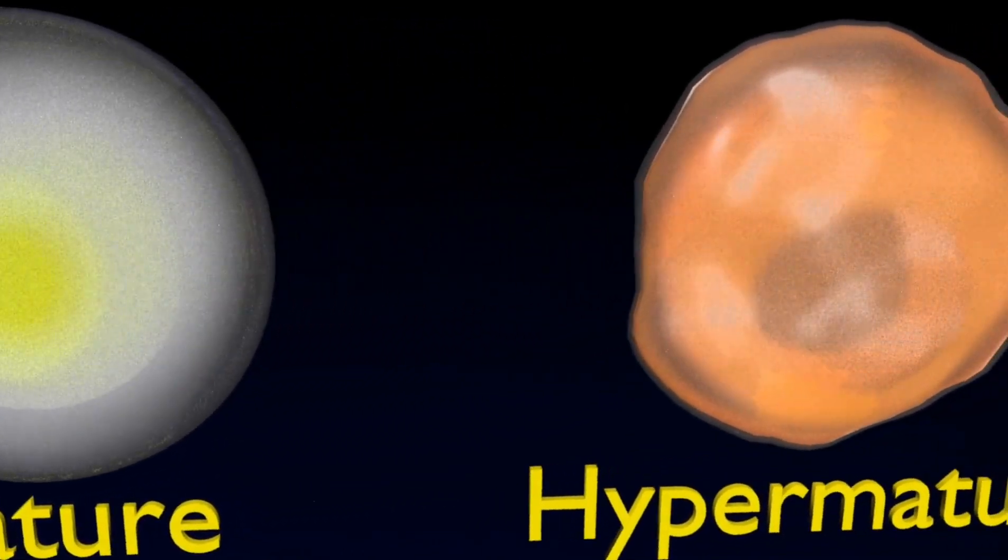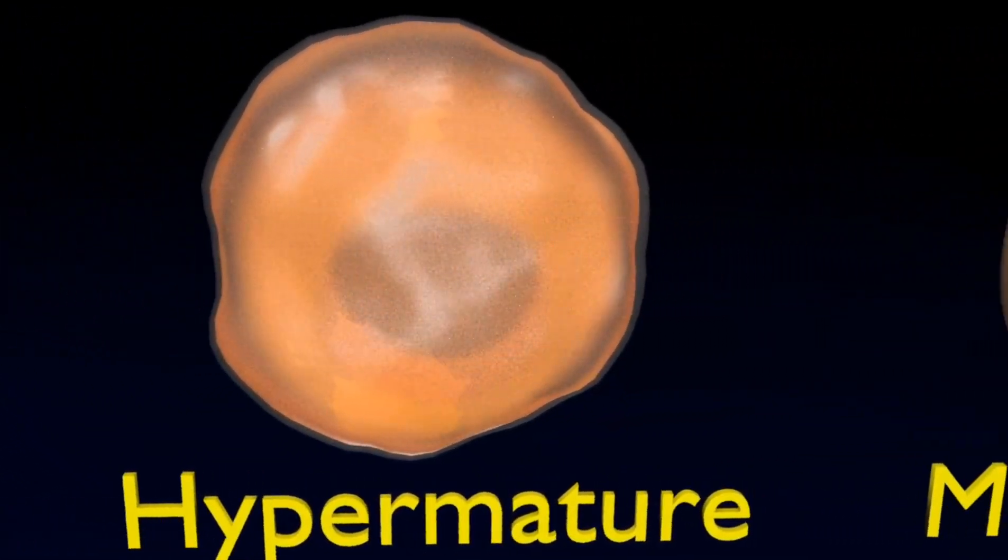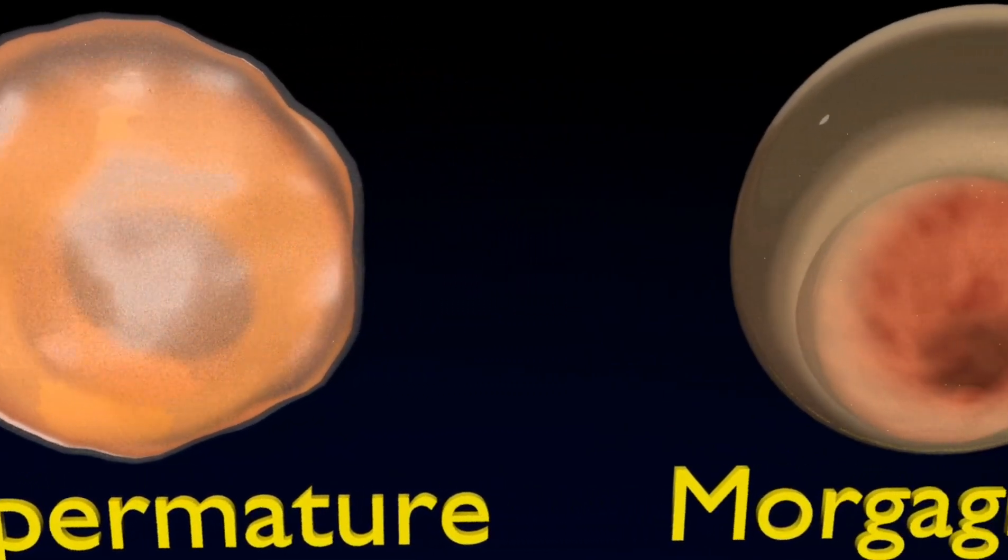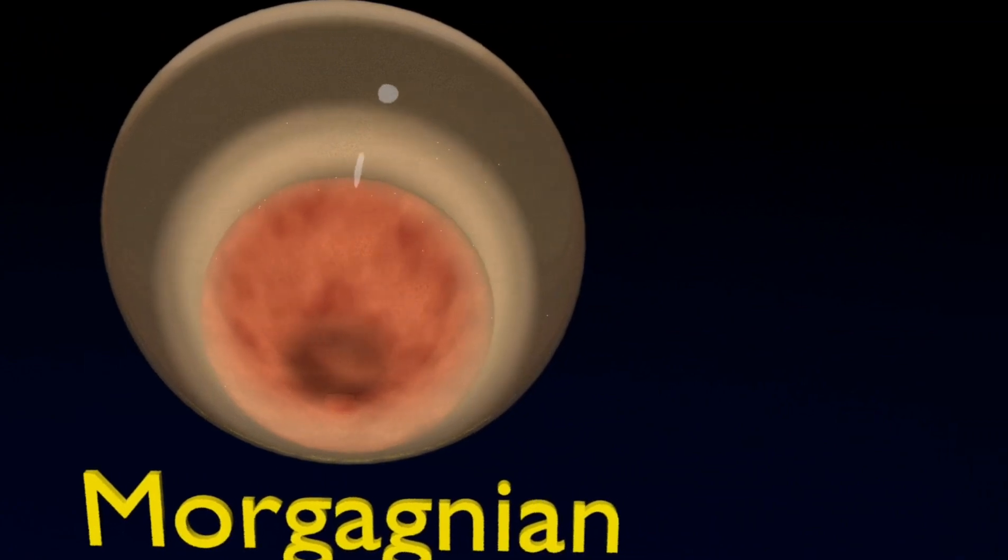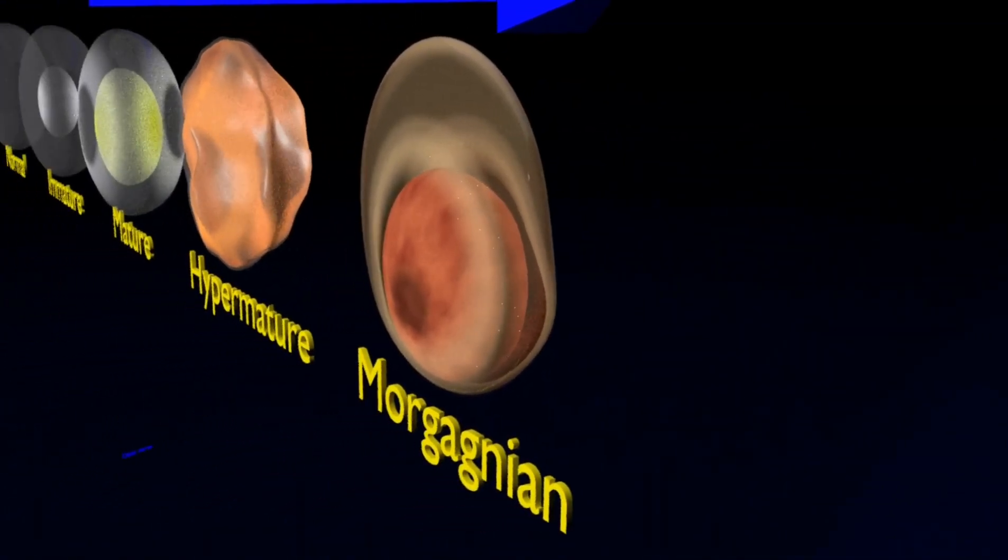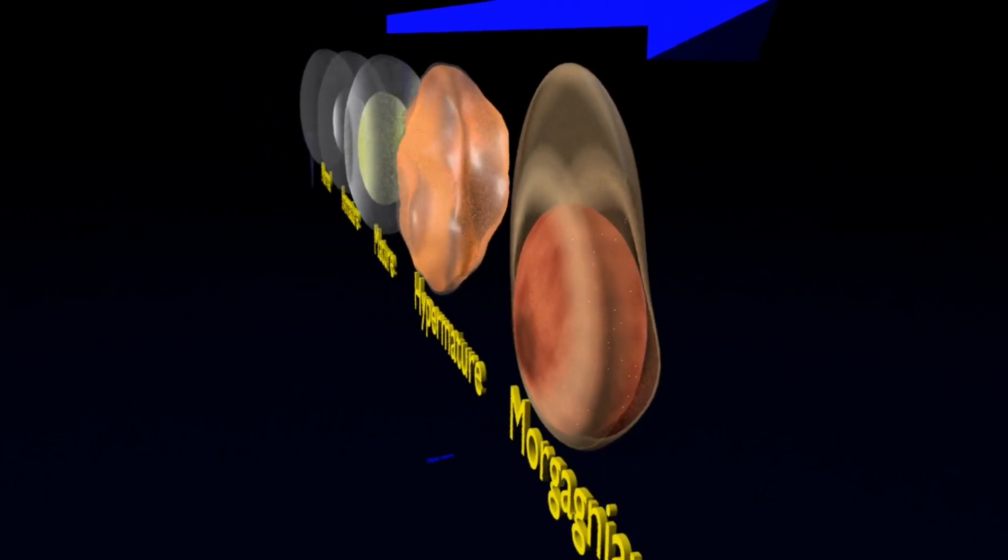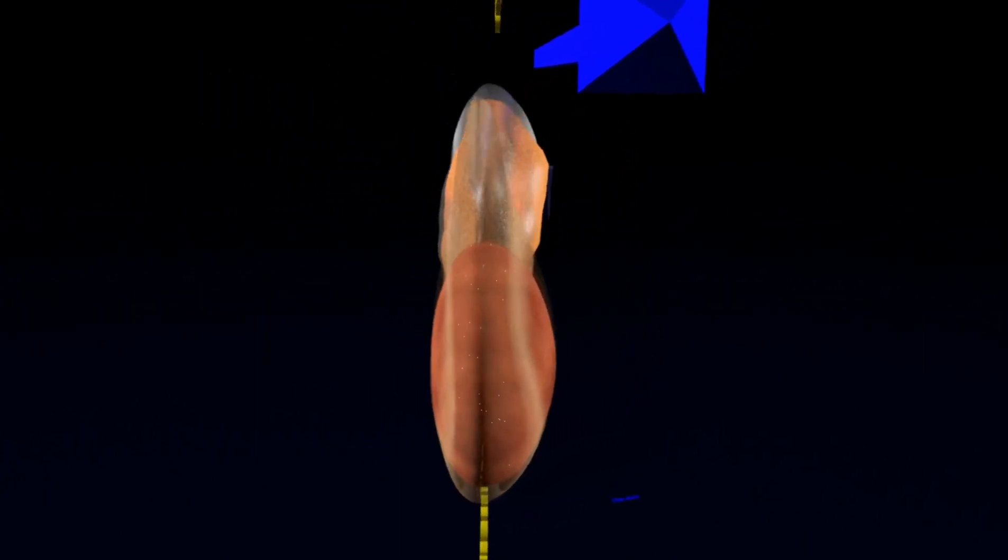Hypermature cataract: The cataract has become very dense, impairing vision to a significant extent and has hardened. Morgaginian cataract: The hypermature cataract in which the total liquefaction of the cortex has allowed the nucleus to sink inferiorly.